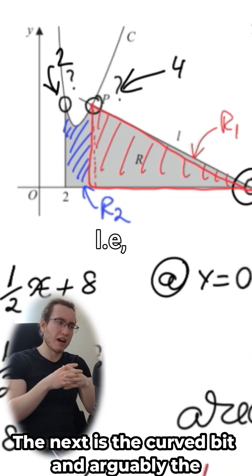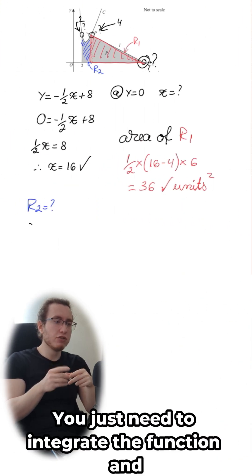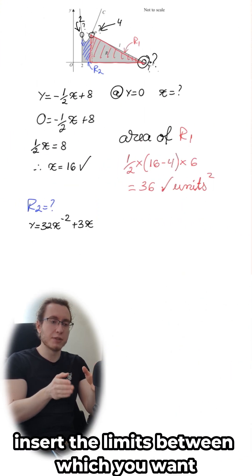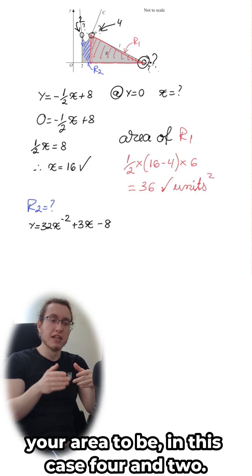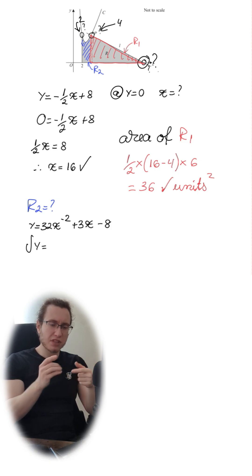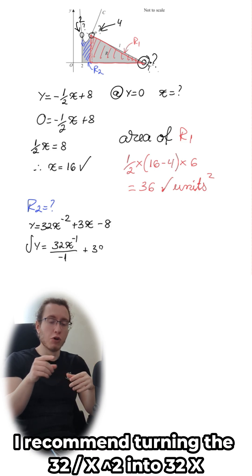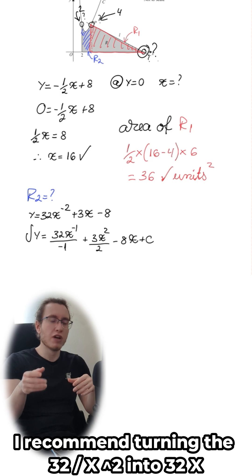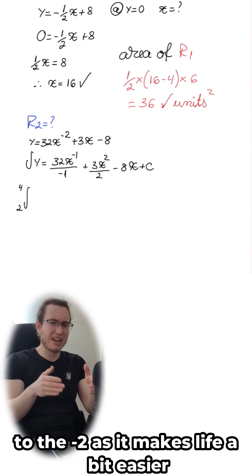The next is the curved bit, and arguably the easier of the two. You just need to integrate the function and insert the limits between which you want your area to be, in this case 4 and 2. I recommend turning the 32 over x squared into 32x to the minus 2, as it makes life a bit easier when you integrate.